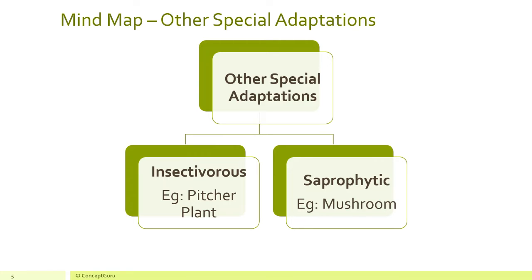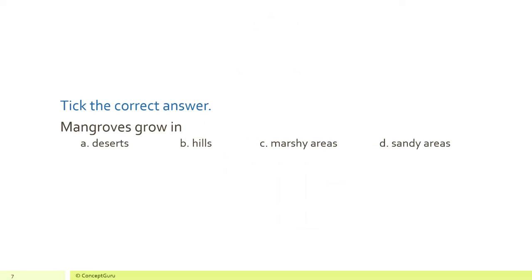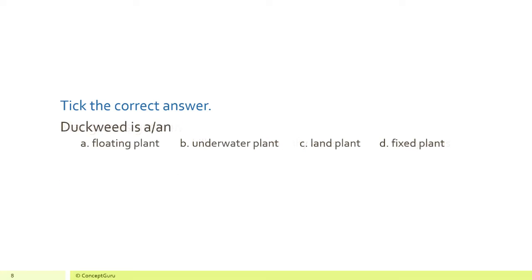Now let's move to the questions and answers from the book. First, tick the correct answer: mangroves grow in (a) deserts, (b) hills, (c) marshy areas, or (d) sandy areas. The correct answer is (c) marshy areas. Next question: duckweed is (a) a floating plant, (b) an underwater plant, (c) a land plant, or (d) a fixed plant.